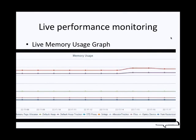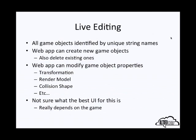For live editing, so long as your game objects are identified by unique string names, the web app can create new game objects and modify game object properties, like the transformation, the render model, collision shape, et cetera. I'm really not sure what the best user interface for this is — I think it really depends on the game and what you're trying to accomplish.